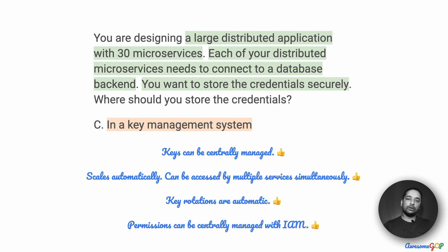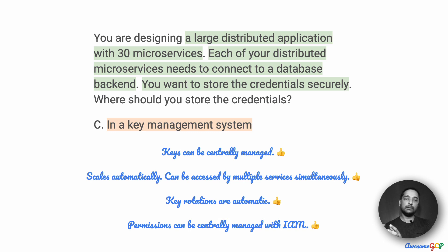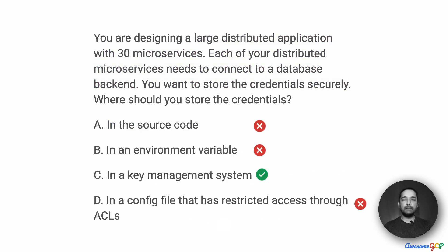Apart from all of this, we also want to ensure that only some services or specific people have access to these keys. These can be controlled centrally using IAM. Identity and Access Management applies even to the Key Management System, allowing you to manage access specifically for certain service accounts — which is the primary use case when multiple services talk to each other, or when only a few specific people should have control. Given all of those advantages, option C is the most suitable: use a Key Management System to store credentials securely.